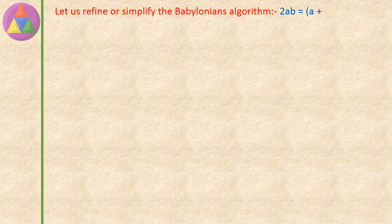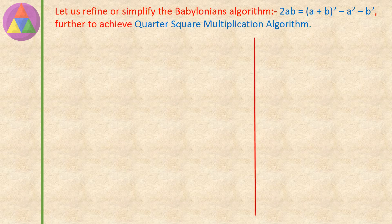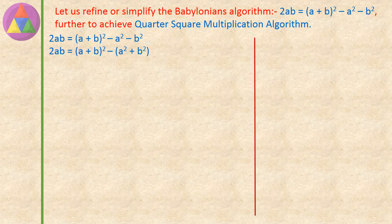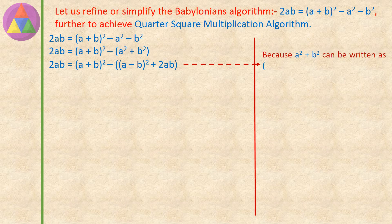Let us refine or simplify the Babylonian's algorithm. 2AB equals A plus B whole square, minus A square, minus B square. Further, to achieve the quarter square multiplication algorithm: this can be written as 2AB equals A plus B whole square, minus within closed brackets A square plus B square. Because A square plus B square can be written as A minus B whole square plus 2AB, which equals A square minus 2AB plus 2AB plus B square, which equals A square plus B square.